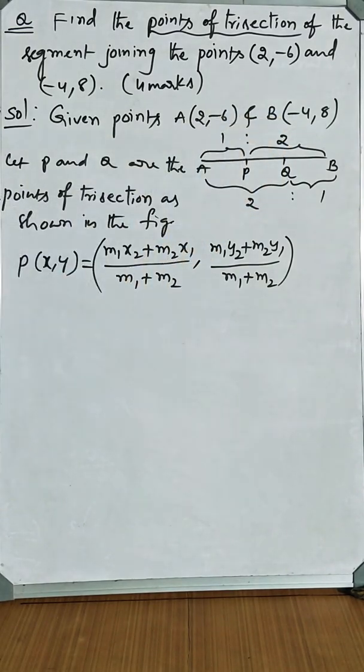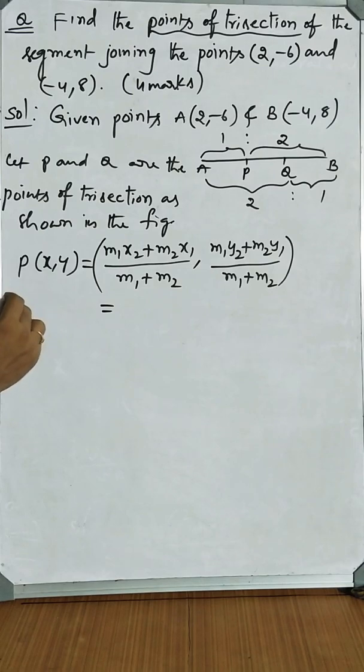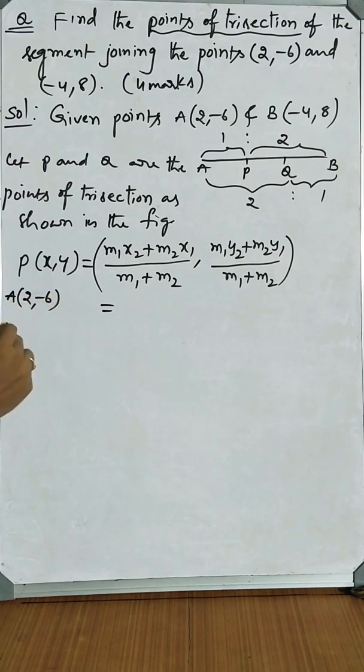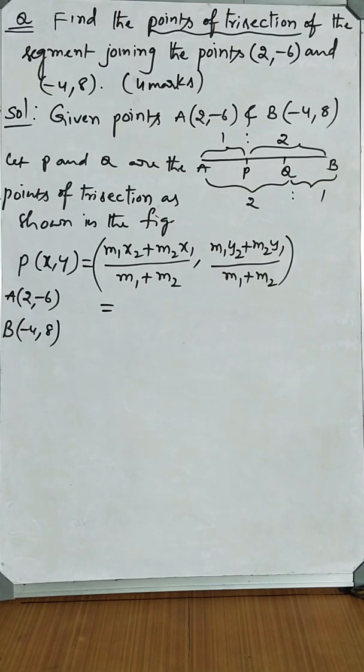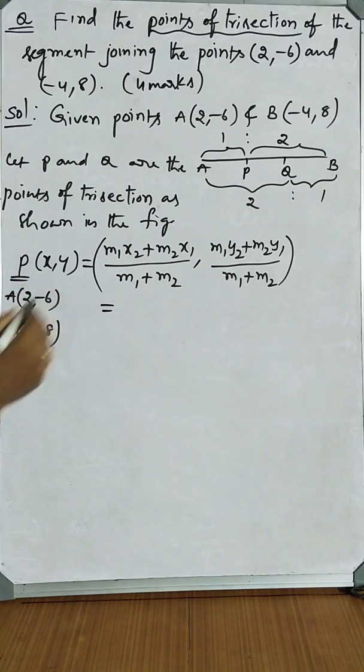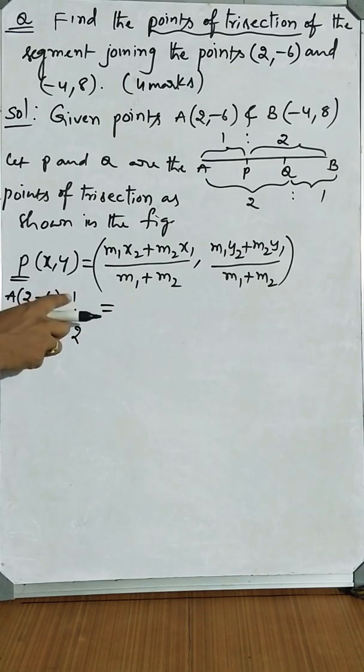Now let us go for the coordinates of P. For our convenience, better to write the points here which will make the substitution very easy. A(2, -6), B(-4, 8). The ratio in which P divides this segment is 1:2.